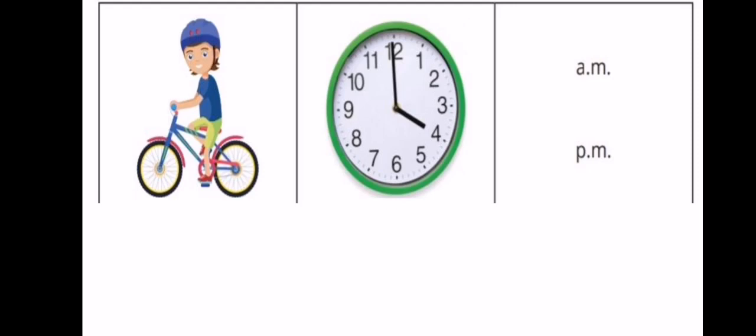Here in the first picture I can see a boy riding his bicycle and it's four o'clock. Is it four o'clock AM or four o'clock PM? It's four o'clock PM.